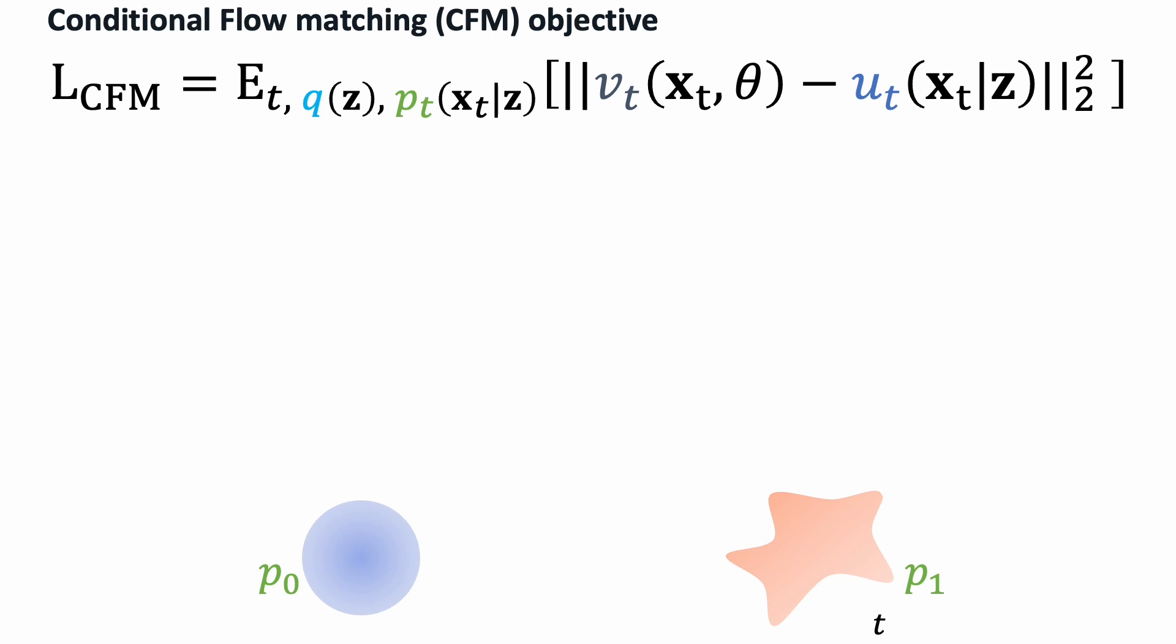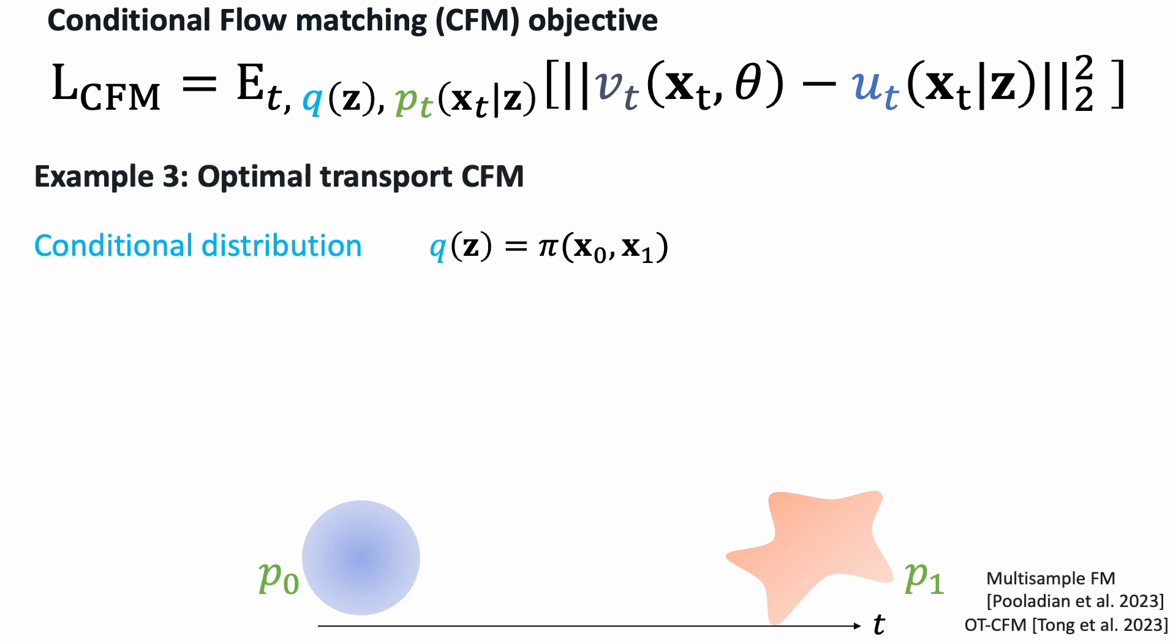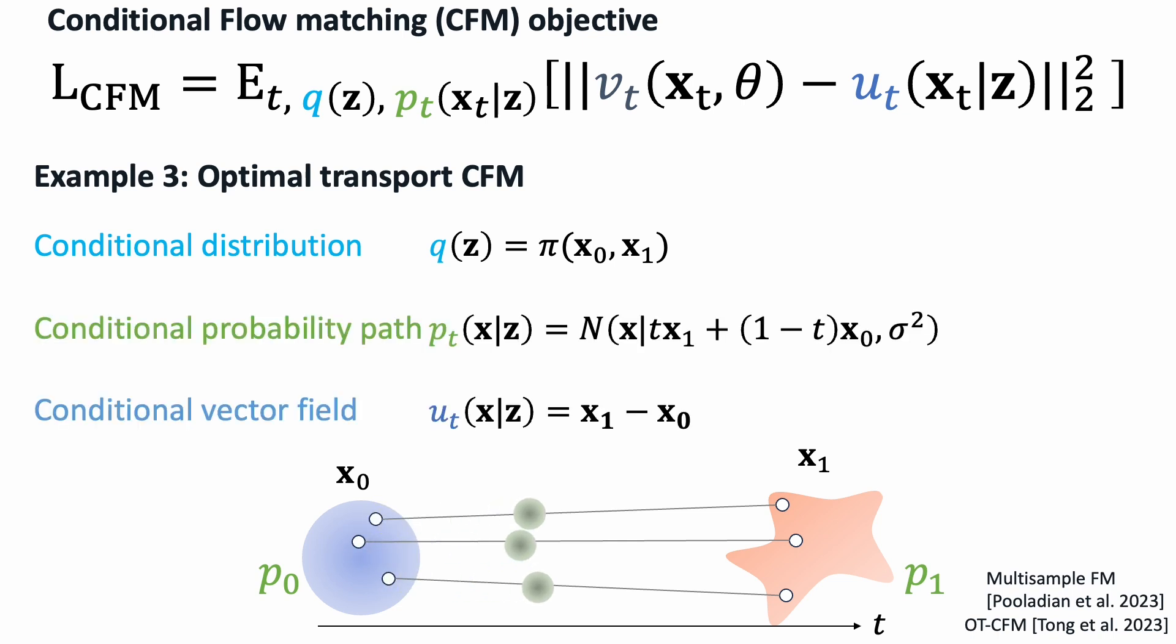We can go beyond simple pair conditioning as well. For example, we can draw multiple samples from the base distribution and multiple data points from the training dataset. We then establish the correspondence between them using optimal transport and create probability paths and vector fields for training. This helps us create straighter paths for more stable training and faster inference speed.